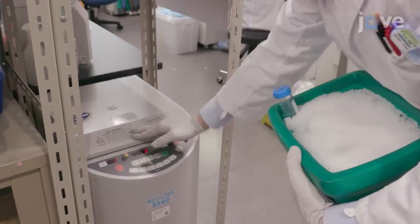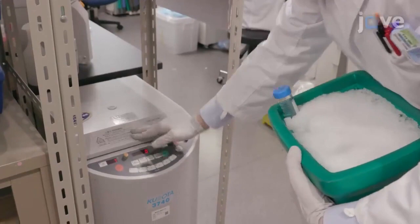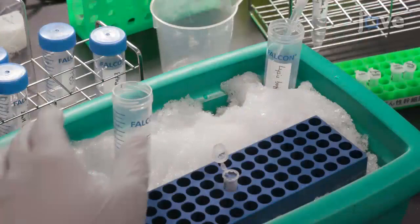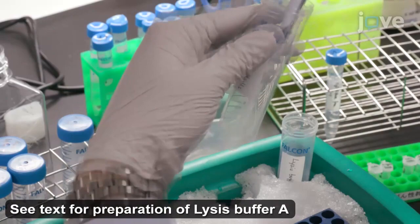Then centrifuge the sample at 1,450 times gravity for 5 minutes at 4 degrees Celsius and discard the supernatant. Use 1 milliliter of ice-cold lysis buffer A per 10 million cells to lyse the cells by gentle pipetting.